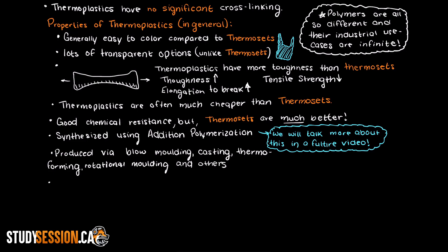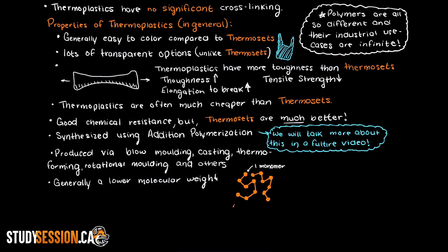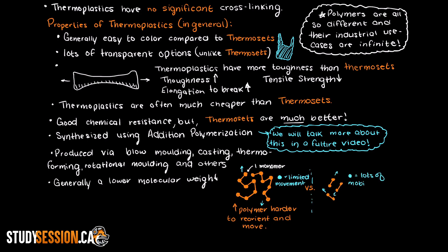Thermoplastics also generally have a lower molecular weight than thermosets, which should make sense. If we had a massive macromolecule for our thermoplastic polymer, we would have a hard time moving that around versus a small snake-like polymer like linear low-density polyethylene.